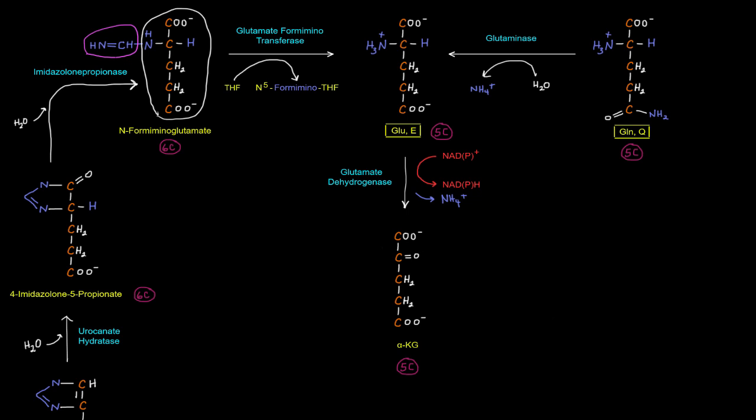And so that form-aminoglutamate can get tacked on to THF in a one-carbon transfer reaction to form N5-form-aminoTHF by glutamate-form-aminotransferase. And so once you get that one-carbon group off, then you have glutamate, which, like we said before, can undergo the glutamate dehydrogenase reaction to give alpha-ketoglutarate, which can go through the TCA cycle and give us some energy.